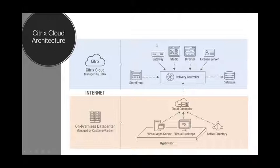In summary, the control plane — the delivery controller, StoreFront, gateway, SQL server, Studio, license server, and Director — is deployed within Citrix Cloud, managed by Citrix, with very little access to the underlying infrastructure apart from Studio and Director. The resource plane, or resource location, is where your virtual app servers, virtual desktop VMs, Active Directory, and the Citrix Cloud connector reside. This resource location can be on-premises, in a public or private hybrid cloud infrastructure — it's your choice of where that resource plane actually exists.